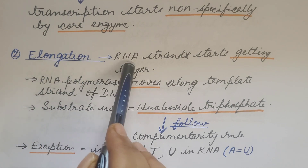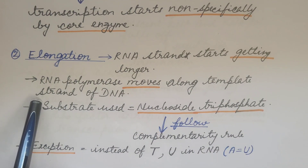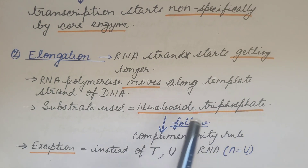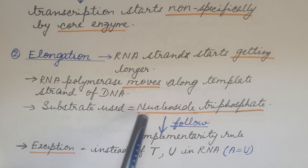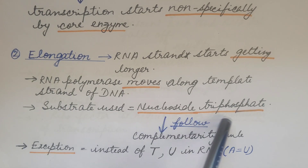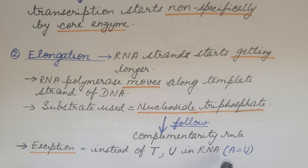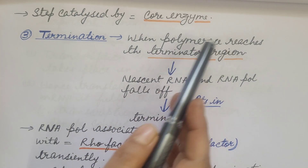The next step is elongation. In this step, the RNA strand starts getting longer. RNA polymerase moves along the template strand of DNA. The substrate used is nucleoside triphosphate, and it follows the complementarity rule — that is, complementary bases of the template strand are added during transcription, except that instead of thymine, uracil is added in RNA, because during transcription adenine of the template pairs with uracil in RNA. This elongation step is catalyzed by the core enzyme.